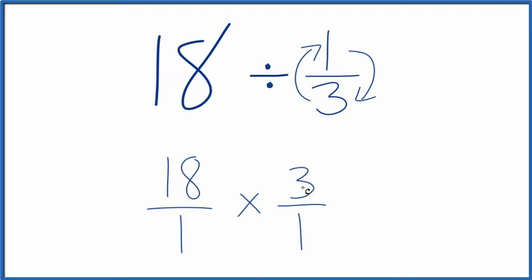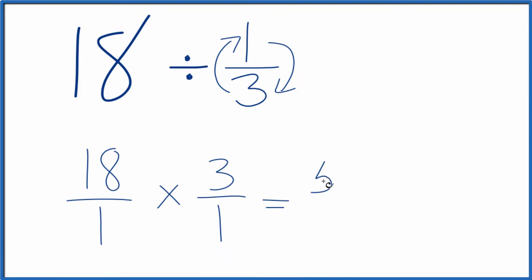So now when we're multiplying fractions, we multiply the numerators, then the denominators. That gives us our answer. So 18 times 3 is 54, and 1 times 1 is just 1. And 54 over 1, that's just 54.